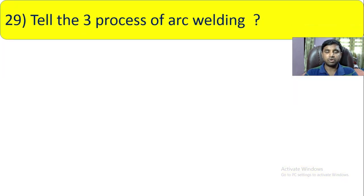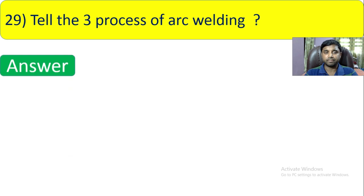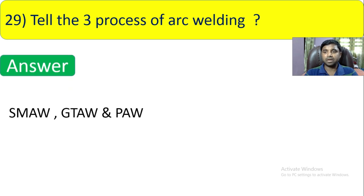Question number 29: Name three processes of arc welding. The answer is SMAW (Shielded Metal Arc Welding), GTAW (Gas Tungsten Arc Welding), and PAW (Plasma Arc Welding). These are three processes of arc welding.